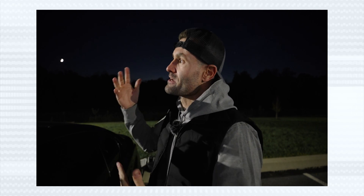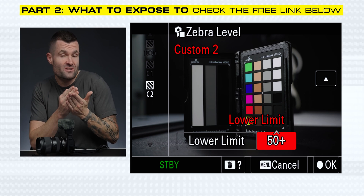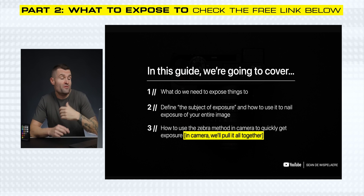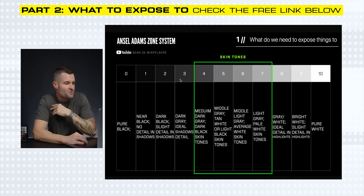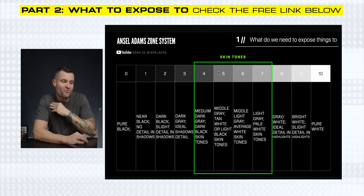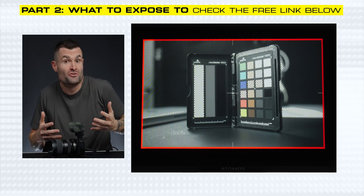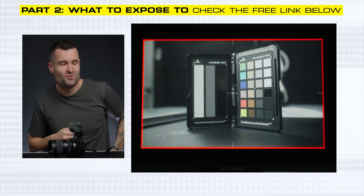There is actually a fourth way to manipulate exposure — and if you want to know more about that and how variable ND filters work, check out the linked video. I also put together a part two to this video, because now that you're a master of aperture, shutter speed, and ISO, you need to know what to actually expose things to in order to get proper exposure, and how to set up your camera to easily understand those values. There's a free link below if you want to access part two and get true mastery over your aperture, shutter speed, and ISO, as well as exposure of your photos and videos.